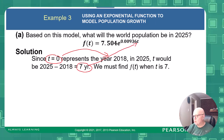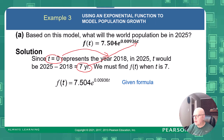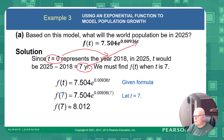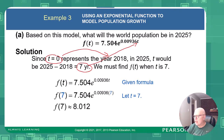It's an easy job for the calculator — put seven in for t, and we get approximately 8.012 billion people in 2025.